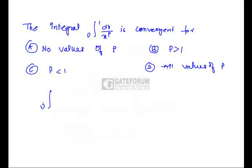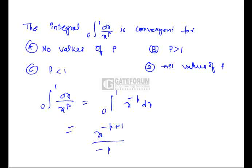The integral is 0 to 1 dx by x bar p. We have to check this integral is convergent for what values of p. Now let us find the integral of this. It can be written as 0 to 1 x bar minus p dx which is nothing but x bar minus p plus 1 by minus p plus 1 over the limit 0 to 1.